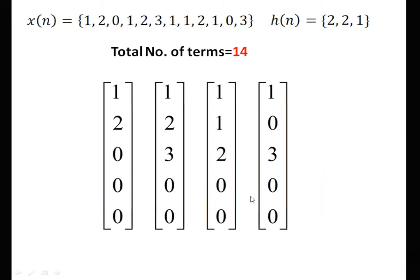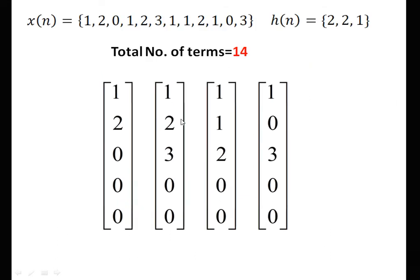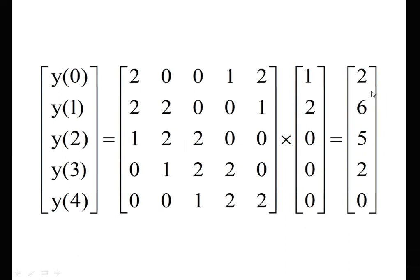We perform the circular convolution. We append 2 zeros to h of n, making it 2, 2, 1, 0, 0. We circularly arrange h of n for the operations. The first circular convolution with input 1, 2, 0, 0, 0 gives the output 2, 6, 5, 2, 0. The second convolution with 1, 2, 3, 0, 0 gives 2, 6, 11, 8, 3. The third convolution with 1, 1, 2, 0, 0 gives output accordingly.